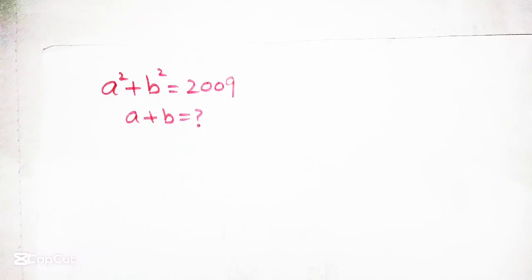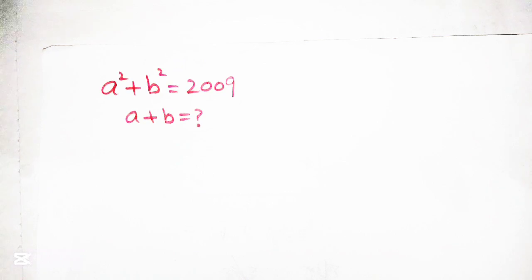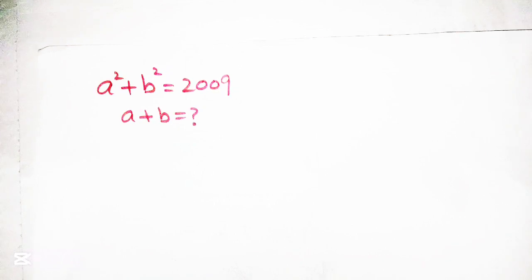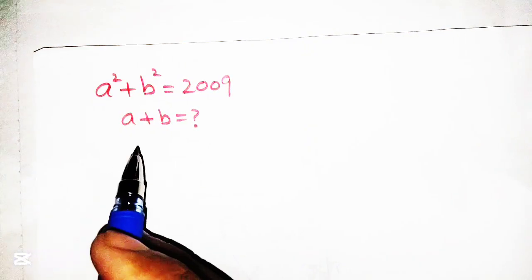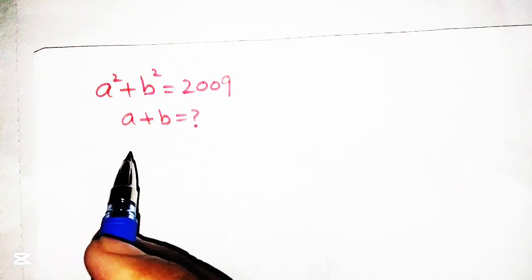Hello guys, welcome to my YouTube channel Lumped Edge. Today we are going to solve an interesting equation: a squared plus b squared is equal to 2009, and we have to find the value of a plus b. So let's start.